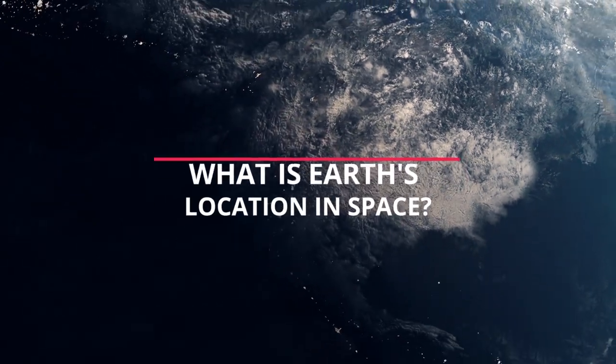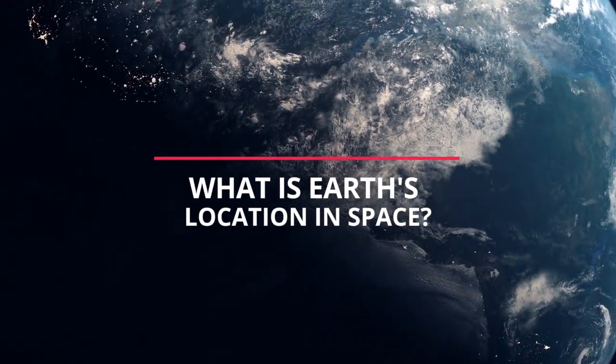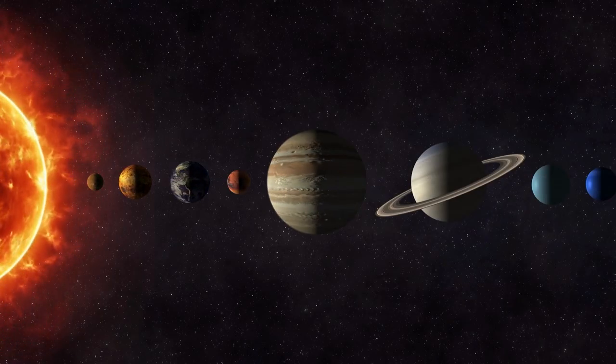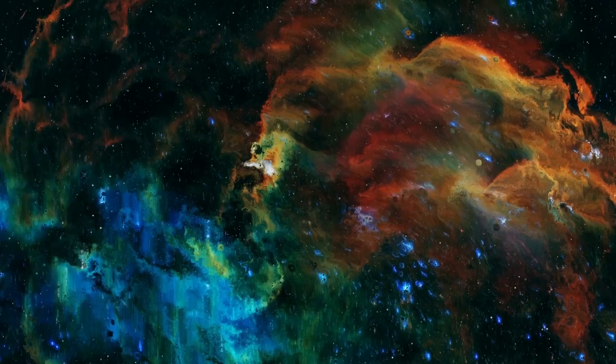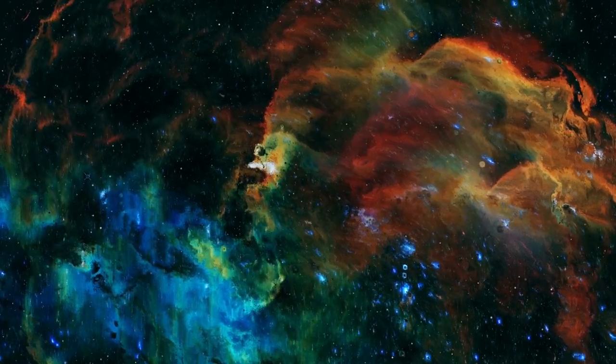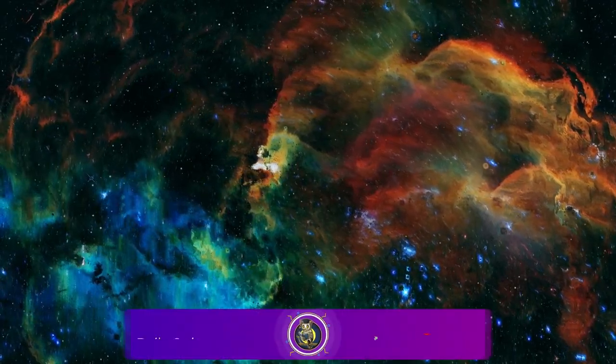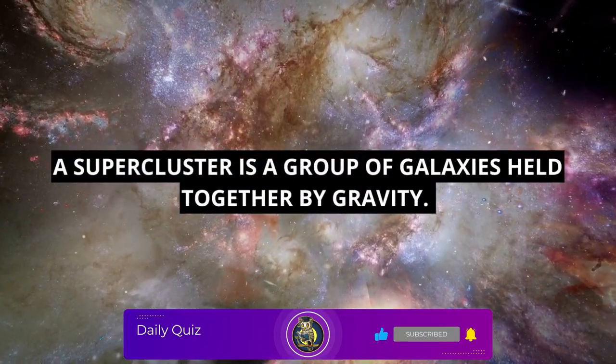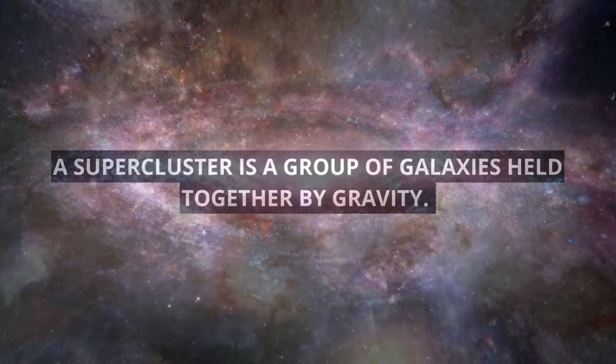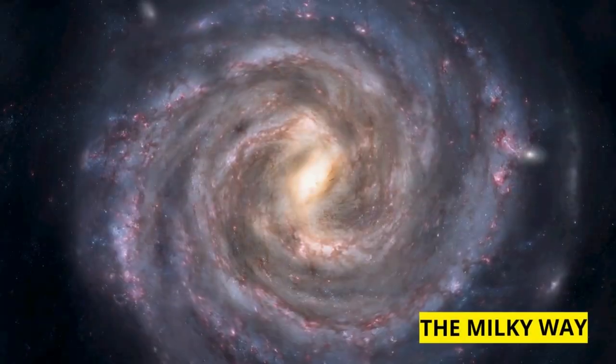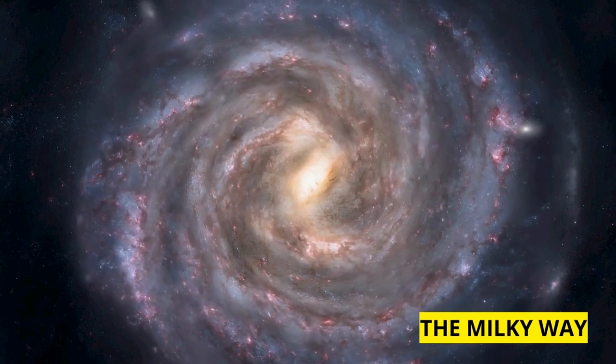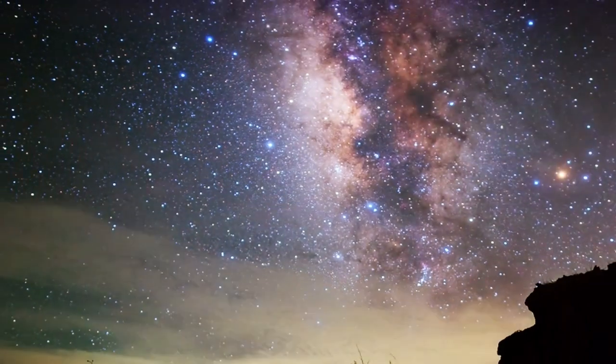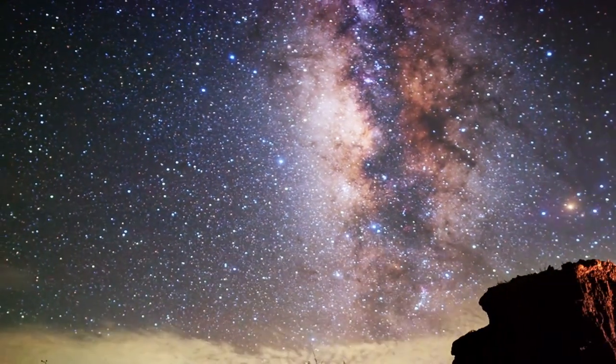What is Earth's location in space? The Earth is the third planet from the sun at a distance of about 93 million miles. In the solar system, the Earth is located in the universe in the Virgo supercluster of galaxies. A supercluster is a group of galaxies held together by gravity. Within this supercluster, Earth is in a smaller group of galaxies called the local group. Earth is in the second largest galaxy of the local group, a galaxy called the Milky Way.